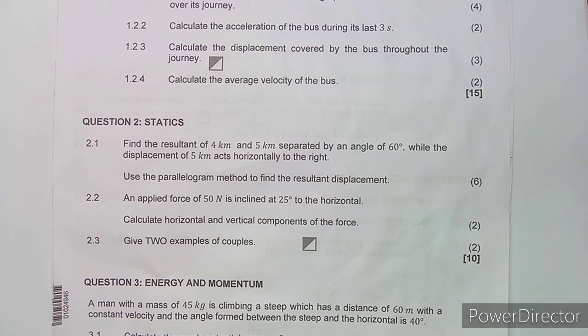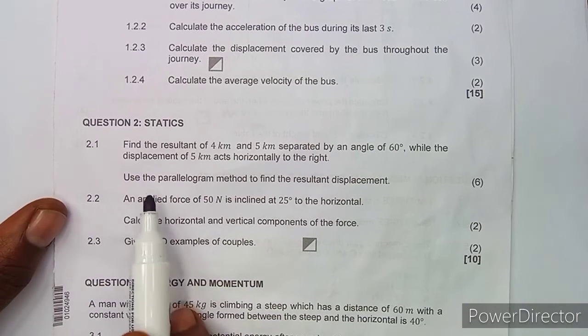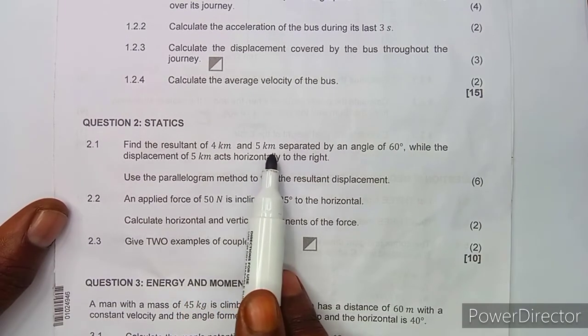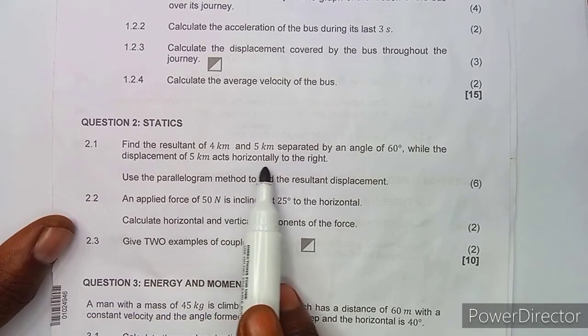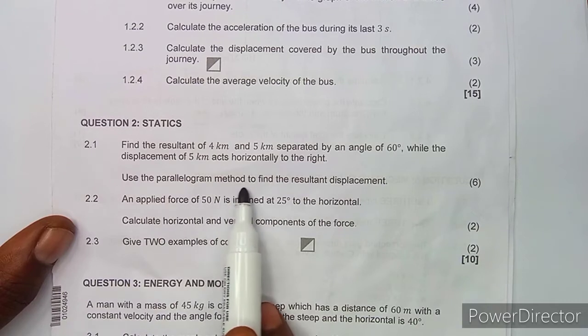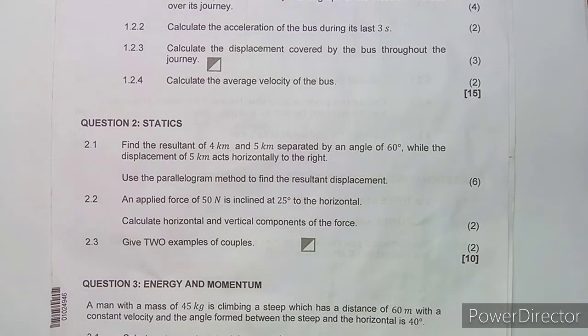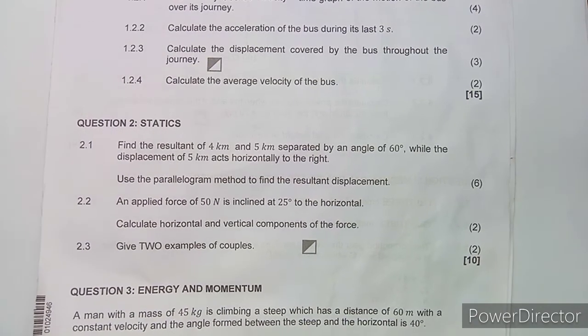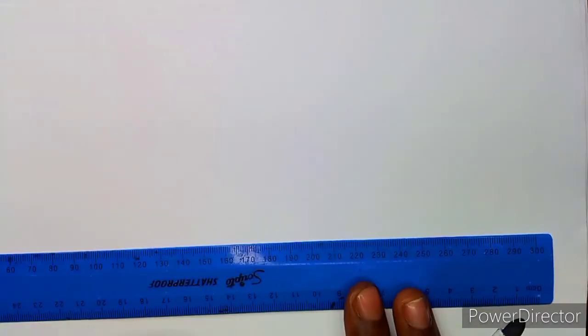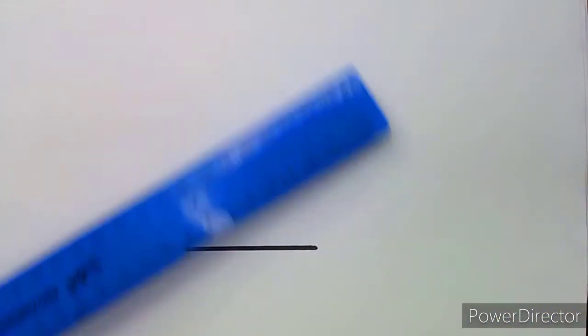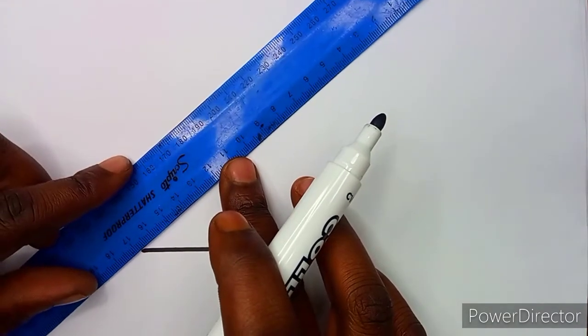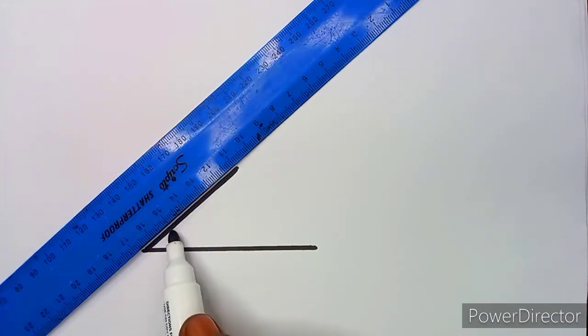The first question on Question 2 is on statics. On 2.1 we are given: find the resultant of four kilometers and five kilometers separated by an angle of 60 degrees, while the displacement of five kilometers acts horizontally to the right. Use the parallelogram method to find the resultant displacement. So we need a diagram to represent this — we have a horizontal displacement of five kilometers, and the two displacements are separated by an angle of 60 degrees.